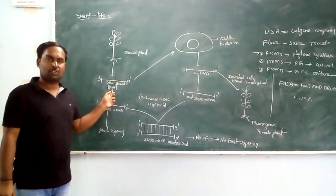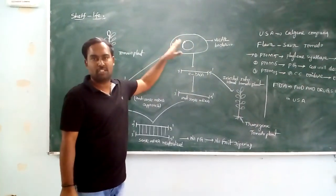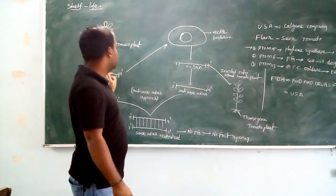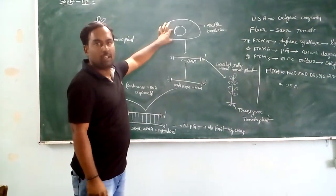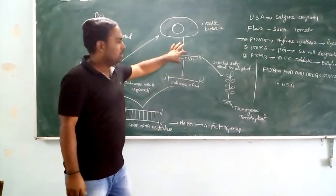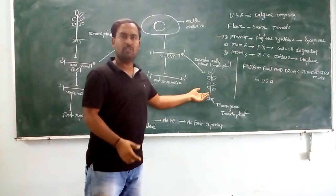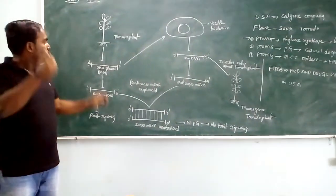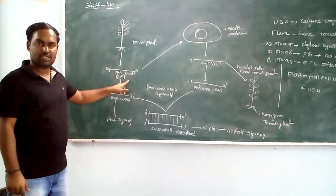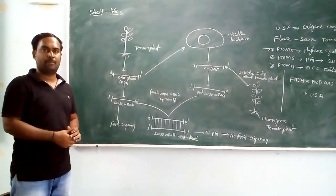Then the Polygalacturonase DNA segment is inserted into a bacterium, that is a vector bacterium, especially E. coli. Then this bacterium DNA and the tomato plant DNA integrate to form complementary DNA. This complementary DNA is inserted into normal tomato plant. Automatically this tomato plant is converted into transgenic tomato plant. Here the DNA strand encodes the enzyme PG, and the PG DNA strand encodes to sense mRNA.